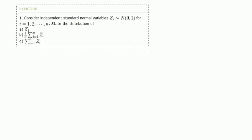And we're going to use this result to do this exercise. So let's consider independent standard normal variables. Standard means the normal with a mean of 0 and a variance of 1. Okay, we have to state the distribution of the following. So let's do them each in turn.